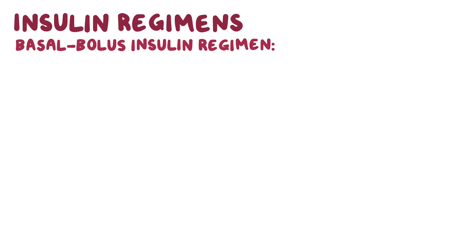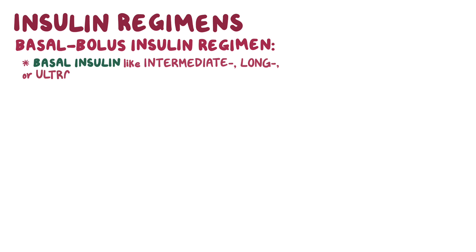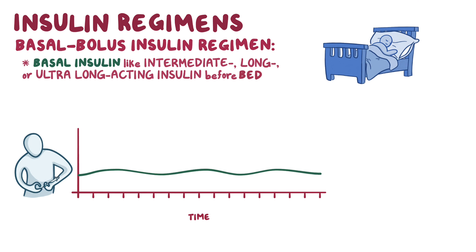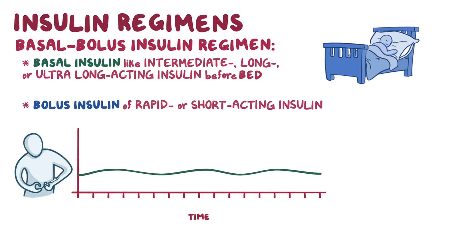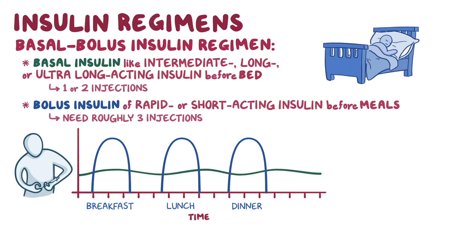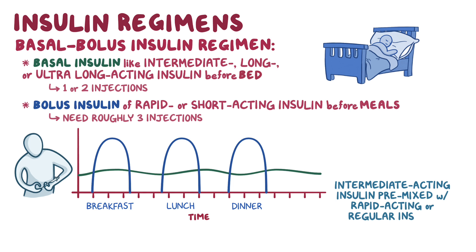One of the most commonly used regimens is the basal-bolus insulin regimen, in which a basal insulin — like intermediate, long, or ultra-long-acting insulin — is given before bed to maintain fasting blood glucose levels, and a bolus of rapid or short-acting insulin is given before meals to control postprandial glucose levels. Typically a client needs roughly three bolus injections and one or two basal injections. For a simpler regimen, intermediate-acting insulin is usually pre-mixed with rapid-acting or regular insulin, taken twice daily before breakfast and before dinner.